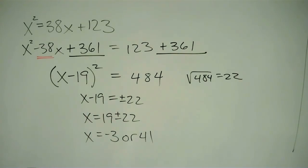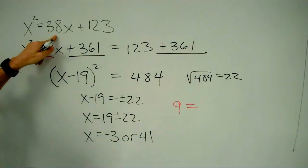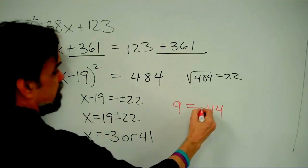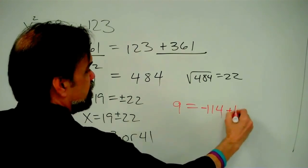I'm a skeptic, so let me just make sure this is right by plugging this in. I'm going to take the one that looks easier to plug in. Negative 3 squared is 9. 38 times negative 3: if I multiply 38 times 3, I get 114, and times negative 3, I get negative 114. And adding 123,